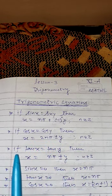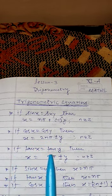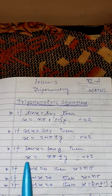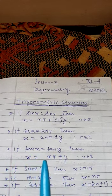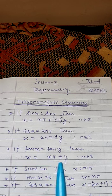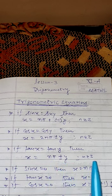In the third case: if tan x equals tan y, then the value of x is given by x equals nπ plus y, where n belongs to Z.